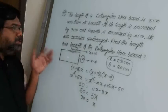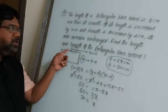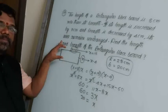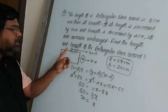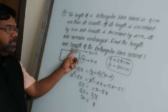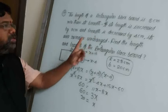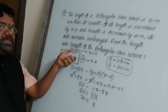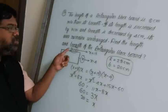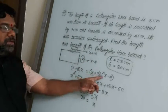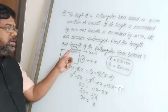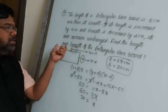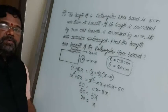Key point: breadth = x, length = x + 8. Condition: length increased by 7 gives x + 15, breadth decreased by 4 gives x − 4. Area remains same, so equate and simplify to get x = 20. Therefore, length = 28 cm and breadth = 20 cm.